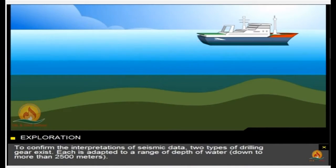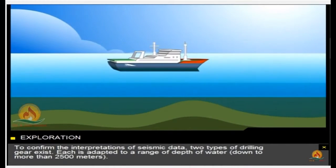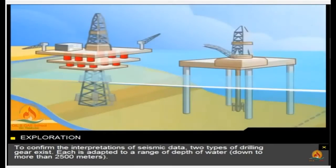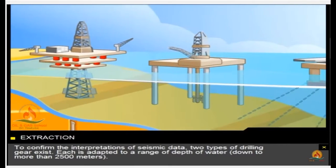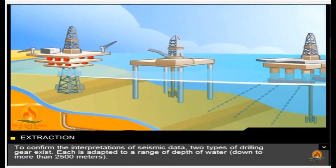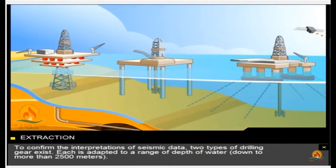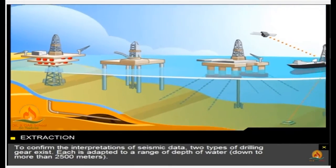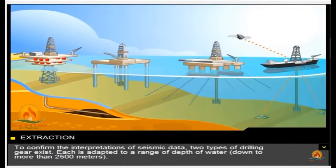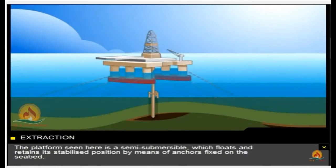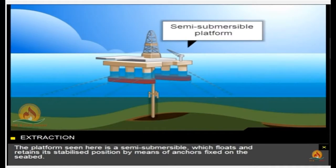To confirm the interpretations of seismic data, two types of drilling gear exist. Each is adapted to a range of depth of water down to more than 2,500 metres. The platform seen here is a semi-submersible, which floats and retains its stabilized position by means of anchors fixed on the seabed.